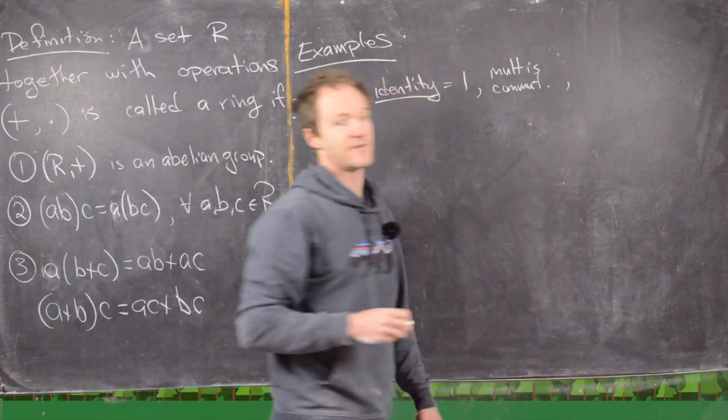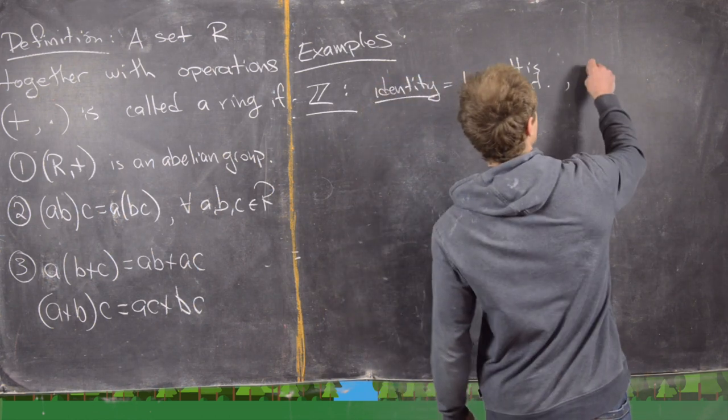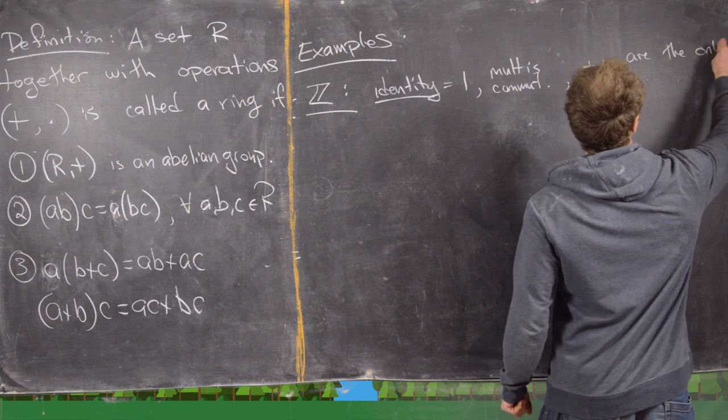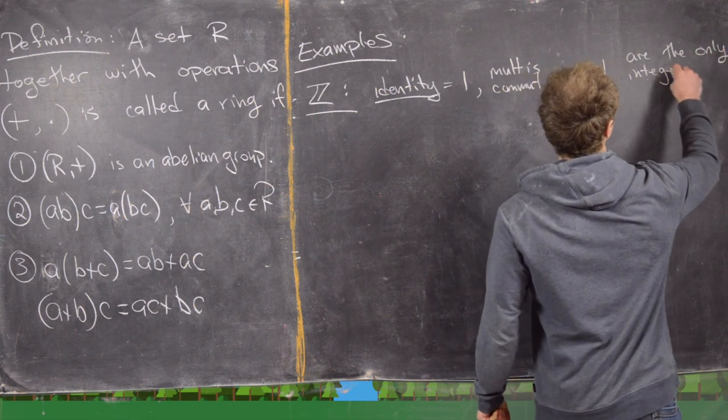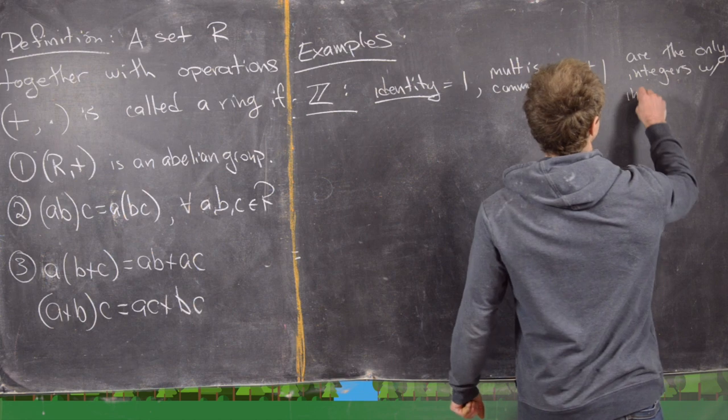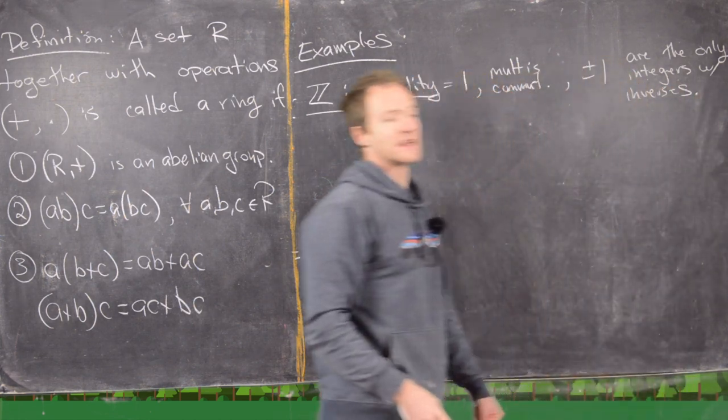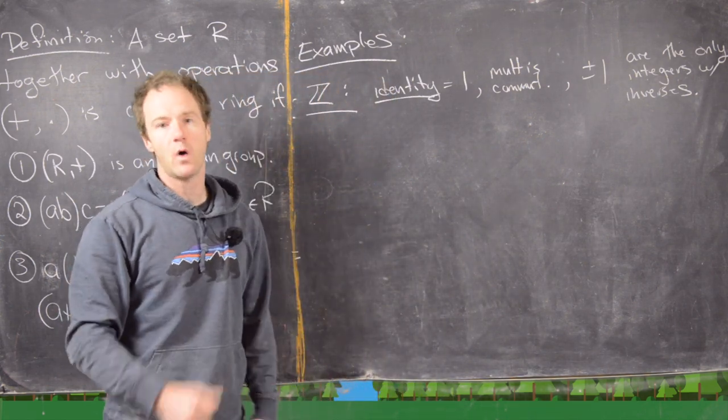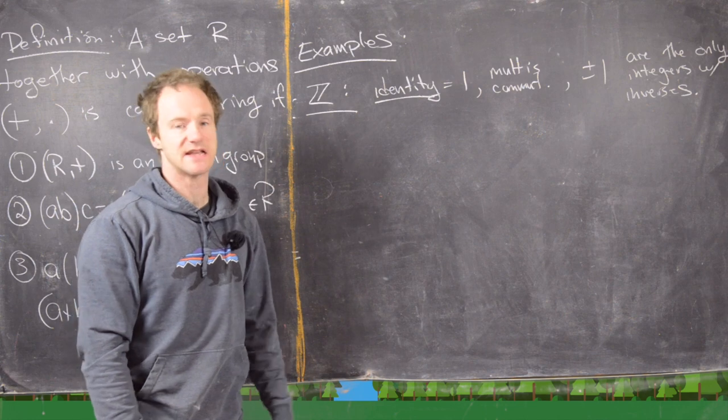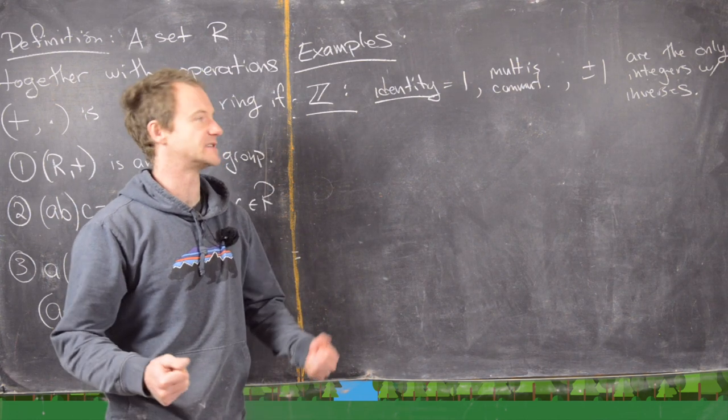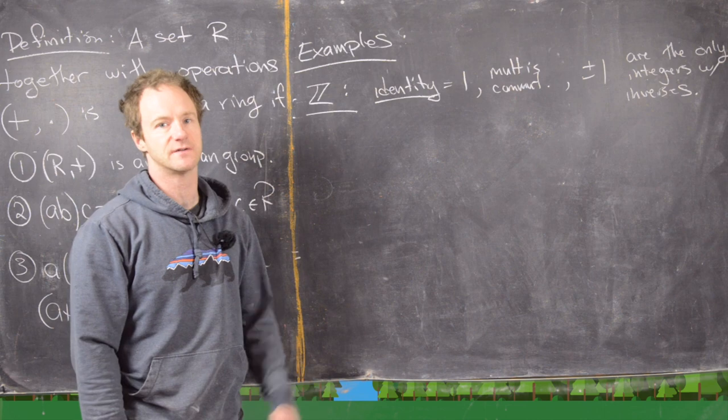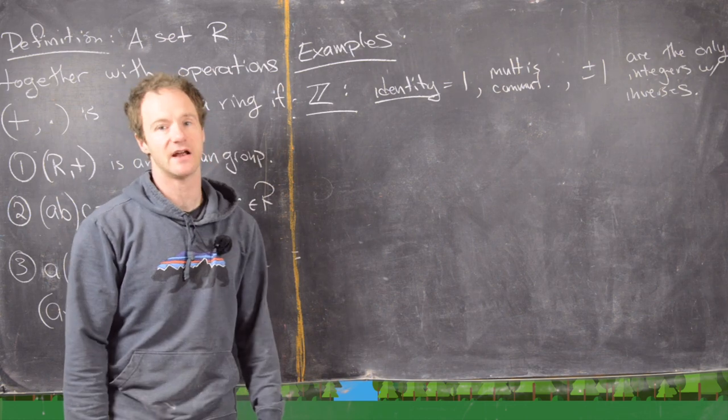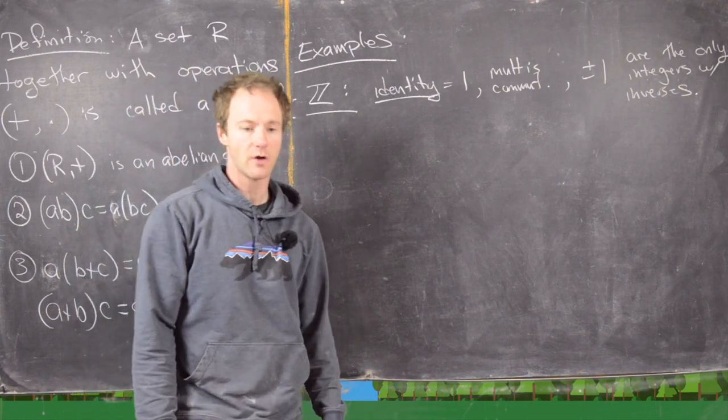But lots of stuff does not have an inverse. In fact plus and minus 1 are the only integers with inverses. And what I should say here is again that's with respect to multiplication because everything's going to have an additive inverse. So notice 1 is its own inverse. That's true because it's the identity. And negative 1 is its own inverse, and that's because negative 1 times negative 1 is positive 1. But everything else doesn't have an inverse. Notice the inverse of 2 is 1 half but that's outside of the integers.